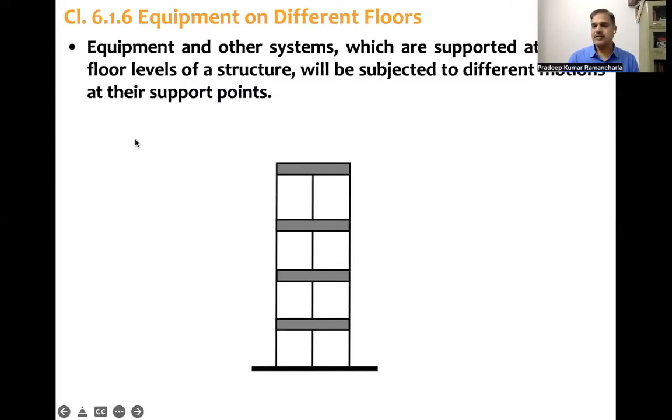Let's say equipment is placed on different floors. Say first floor some equipment is there, second floor something is there, third floor something is there, fourth floor something is there. And this building is subjected to ground motion whose background acceleration is 3.42 meters per second square. This is just an example.